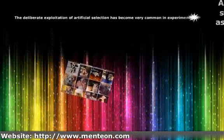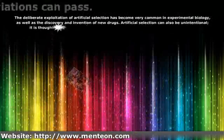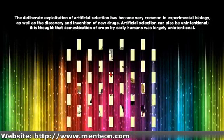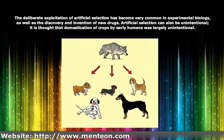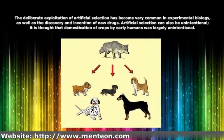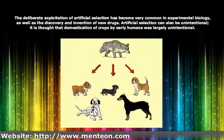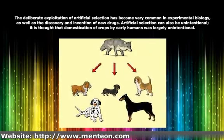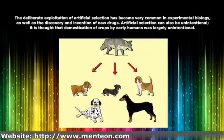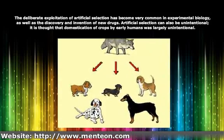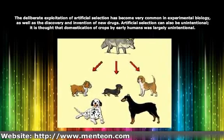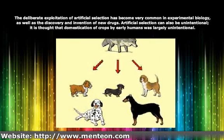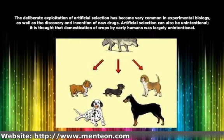The deliberate exploitation of artificial selection has become very common in experimental biology, as well as the discovery and invention of new drugs. Artificial selection can also be unintentional. It is thought that domestication of crops by early humans was largely unintentional.